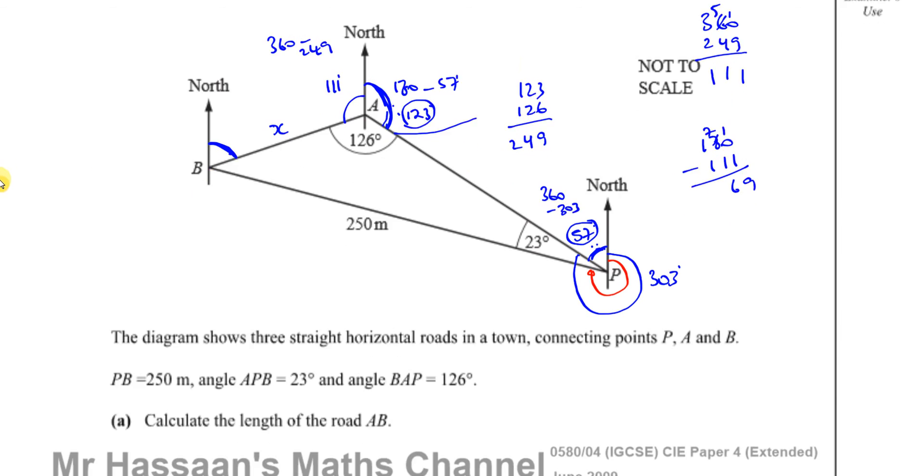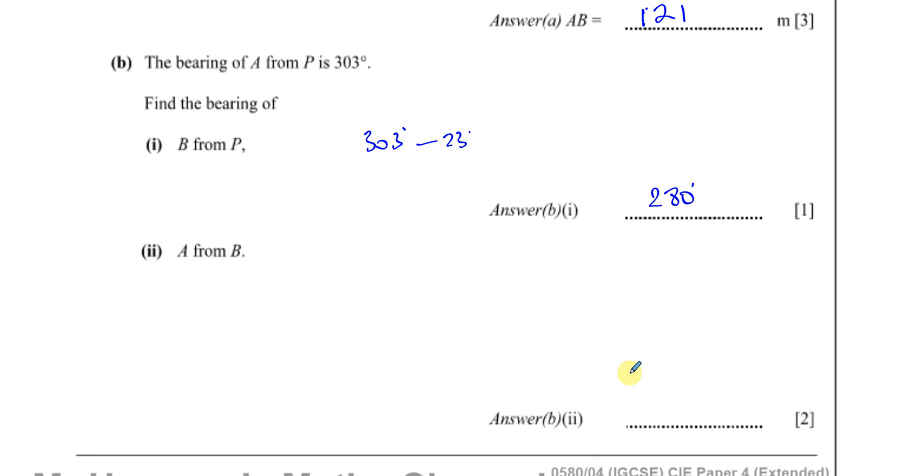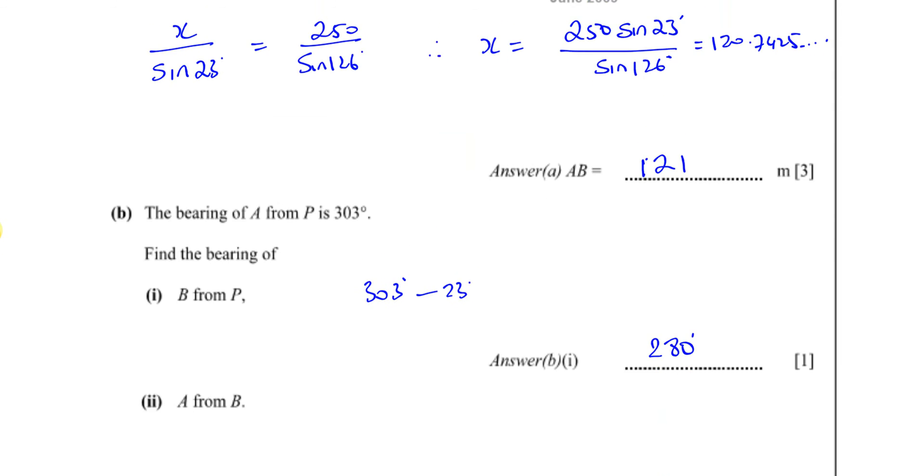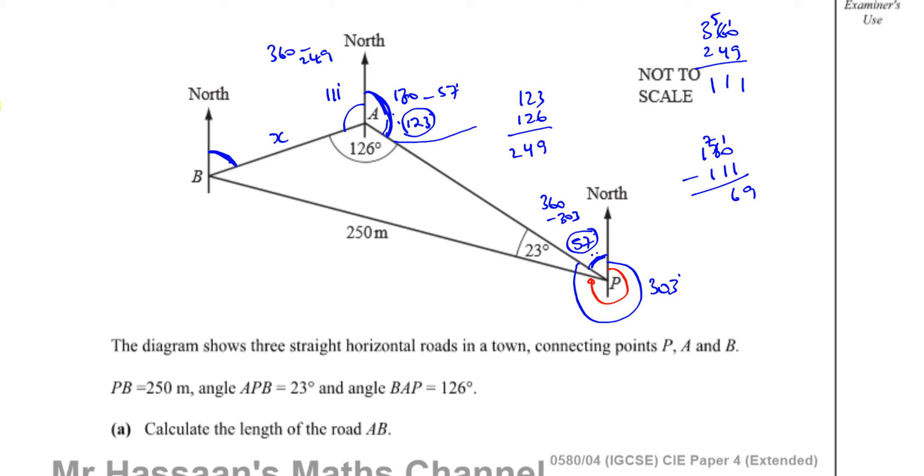The bearing we're looking for is 069 degrees. It should be written with 3 figures. If it's a number that's less than 3 figures, you put zeros in front until it shows 3 figures - that's how you express three figure bearings.